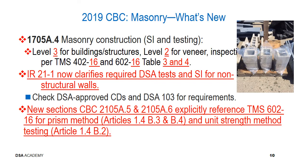For 1705A.4 masonry construction in chapter 17A, because of changes in the reference standard, we had to modify the identification of inspection levels for masonry structures. Now we have level three for buildings and structures — similar to the previous level C — and for veneer it's level two, which used to be level B. These are in the inspections now for TMS 402.16, tables three and four.